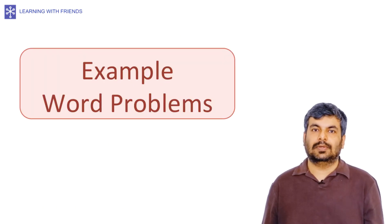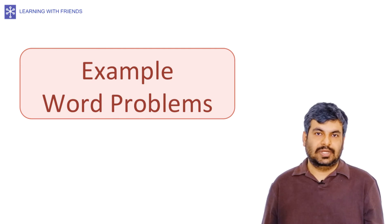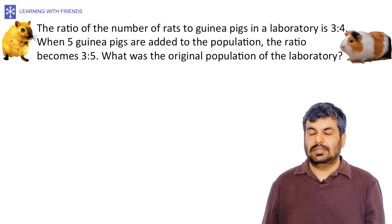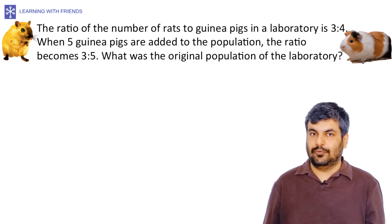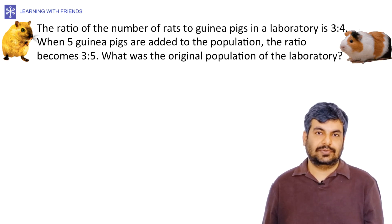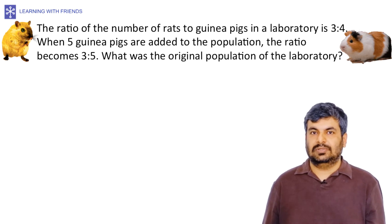Let's look at a few word problems related to ratios. Word problem one: The ratio of the number of rats to guinea pigs in a laboratory is 3:4. When 5 guinea pigs are added to the population, the ratio becomes 3:5. What was the original population of the laboratory?